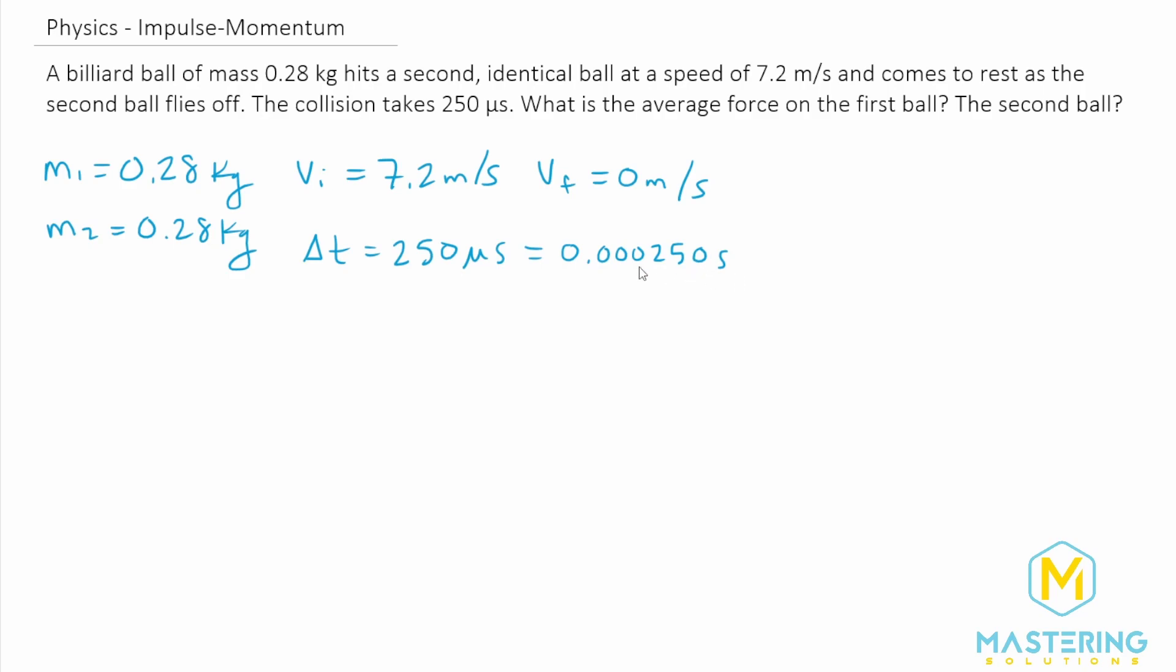It's just a little bit cumbersome to write all of those zeros. So obviously, we have scientific notation. The way that I prefer to write it is to just replace the micro with what it stands for. It just stands for 10 to the negative 6. So we can write 250 times 10 to the negative 6 seconds.